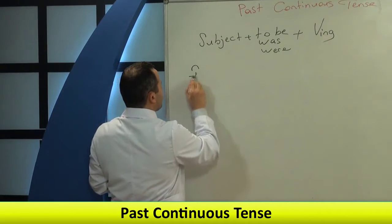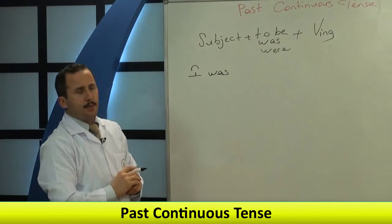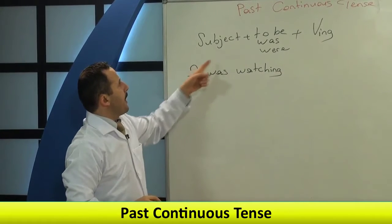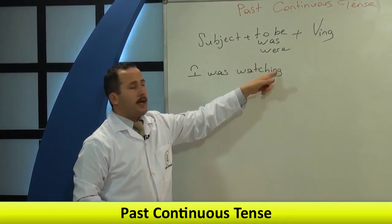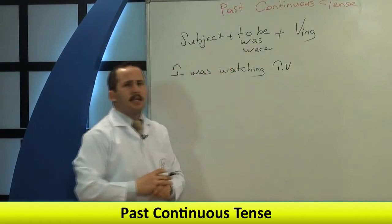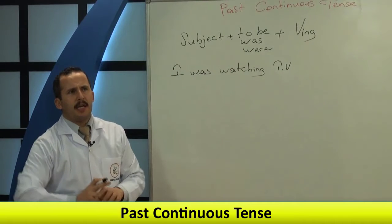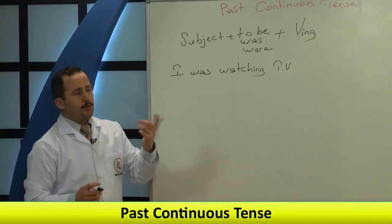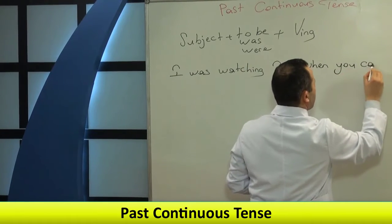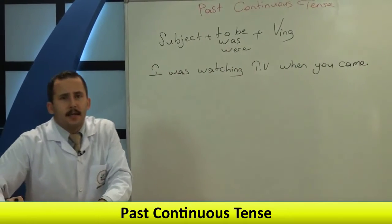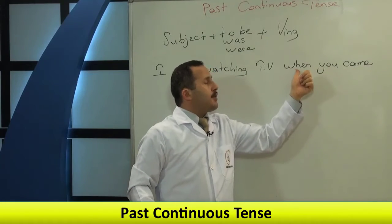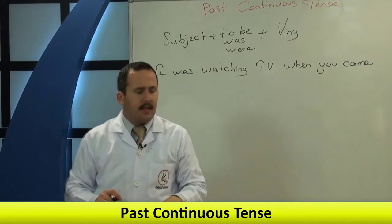Örneğimize başlıyoruz. 'I was watching TV.' Özne, to be — tekil olduğu için was aldı. Watch fiiline -ing geldi: watching TV. 'Ben televizyon seyrediyordum, sen geldiğinde.' Gelmek eylemi bitmiş — düzensiz fiil: come → came. 'When you came.' Yani: 'I was watching TV when you came.' Sen geldiğinde / geldiğin zaman ben televizyon seyrediyordum.